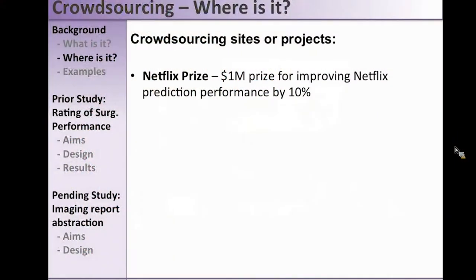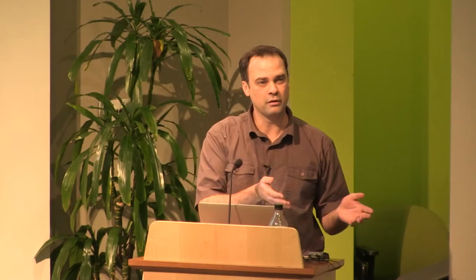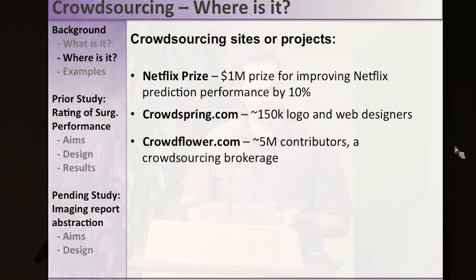The classic, most famously known crowdsourcing project is the Netflix Prize. A few years ago Netflix offered a million dollars to any group or person that could improve their rating prediction performance by ten percent or greater. They gave groups gigabytes and gigabytes of data to run complex statistical models on, and a group out of Bell Labs actually ended up winning the million dollar prize.